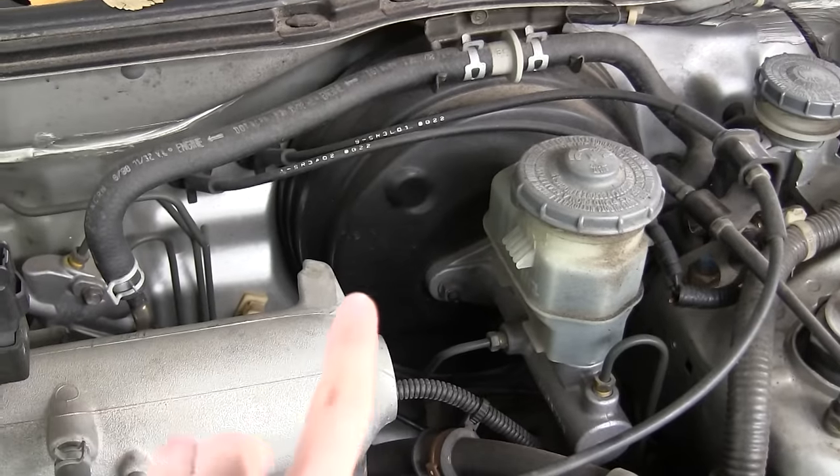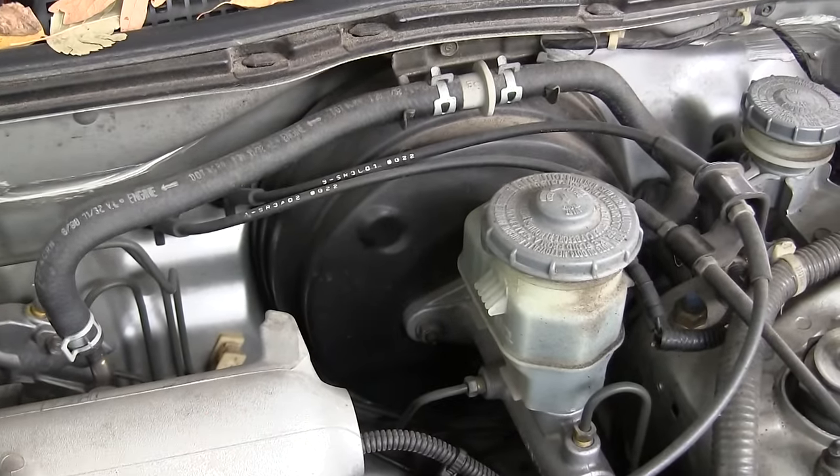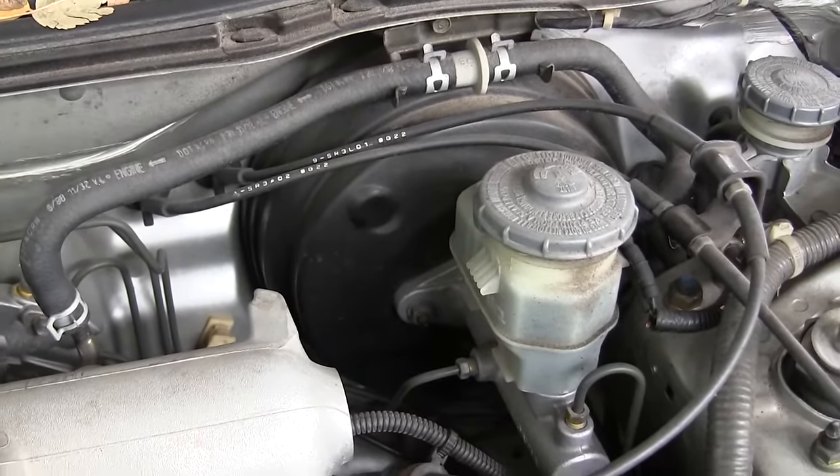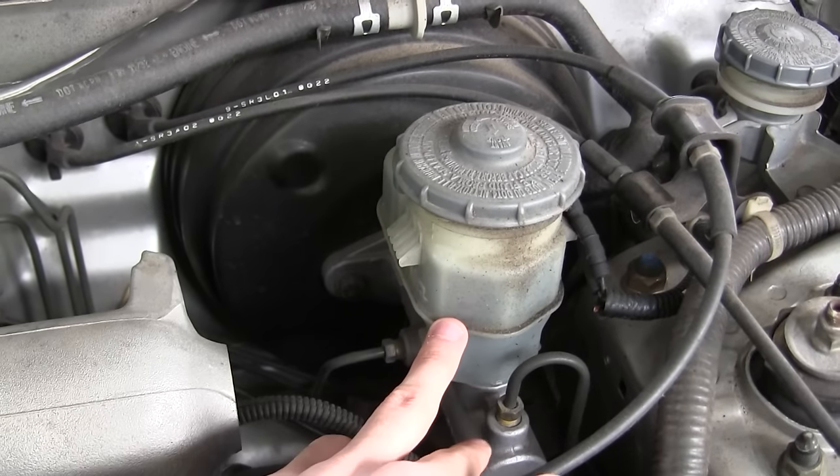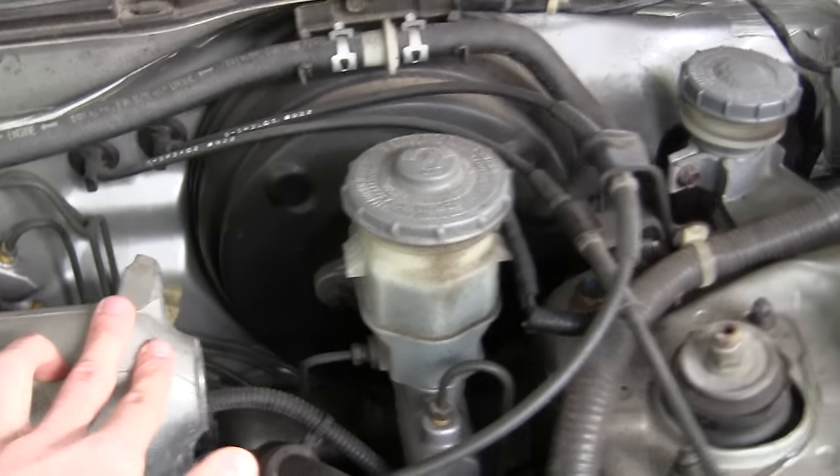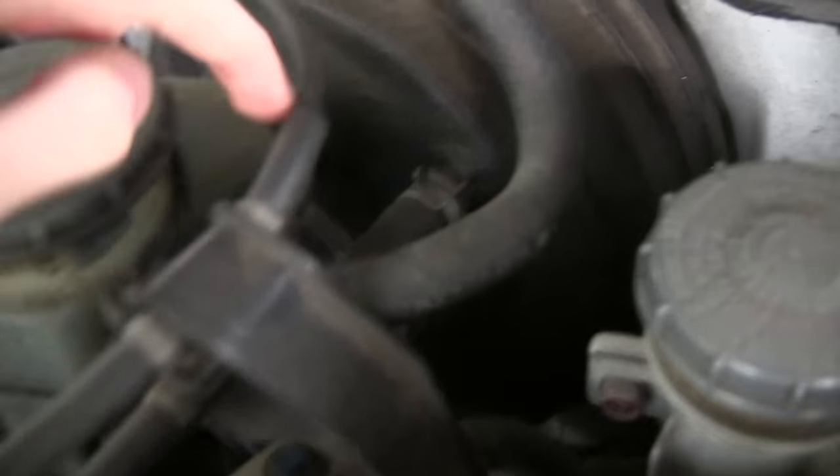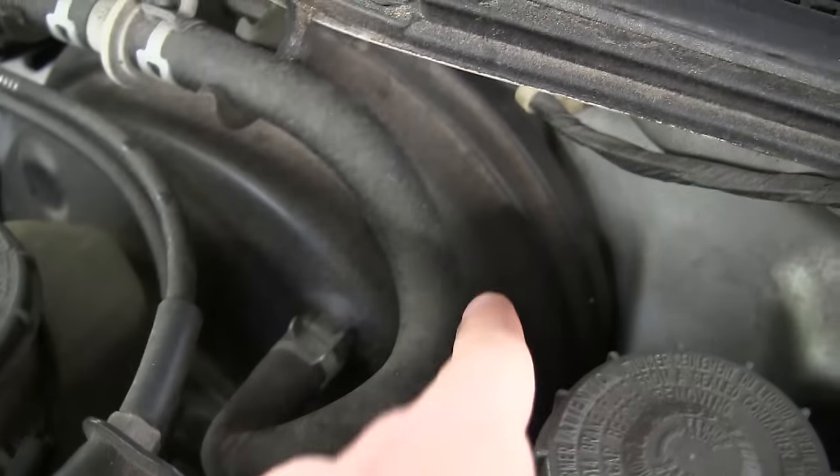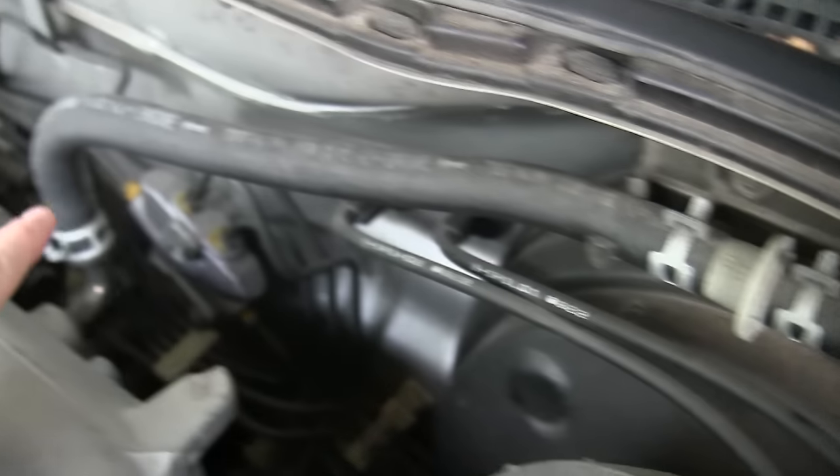So this big black chamber you see here is the vacuum assist for the power brakes. Here we've got our brake fluid, and as you can see it's got a tube running from the vacuum assist. We follow that to the intake manifold.